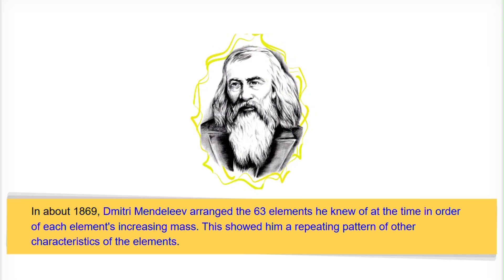In about 1869, Dmitry Mendeleev arranged the 63 elements he knew of at that time in order of each element's increasing mass. This showed him a repeating pattern of other characteristics of the elements.